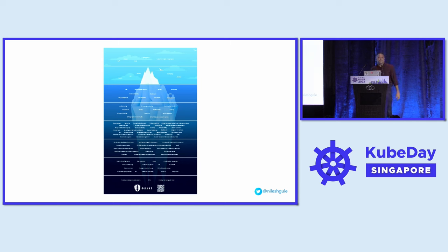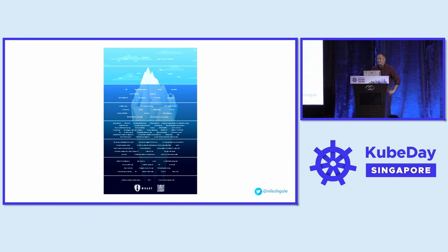Has anybody seen this iceberg picture related to Kubernetes before? What it talks about is the different layers of tools, technologies, and information required when you start working with Kubernetes and when you want to make it production grade. Starting from the top, it's easy to create a deployment, get your service up and running, have multiple replicas, and a ConfigMap. But as you go down the layers, complexity keeps increasing, making it quite challenging even for experienced Kubernetes administrators to manage things like stateful services, custom resource definitions, and advanced features — which most companies find when running Kubernetes in production.